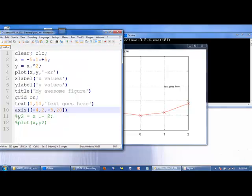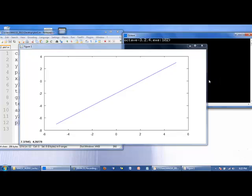If you now try to issue the plot command again, that will overwrite whatever is currently on the plot. So if we say y2 is equal to x minus 2 and then plot y2 versus x, we see that it overwrote the previous plot.